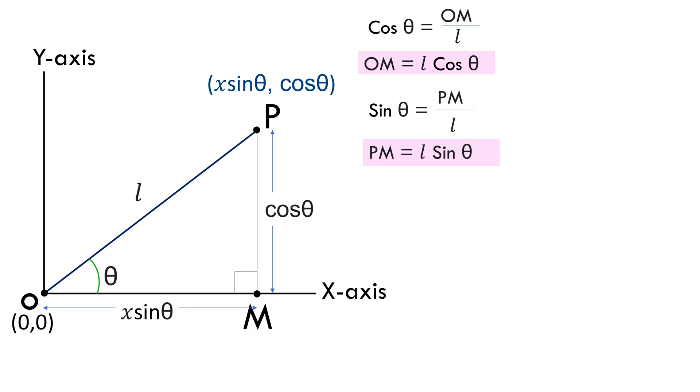But we have calculated OM and PM to be l cos theta and l sin theta respectively. Because both the values of OM and PM has to be true, we will equate these two values of OM and then do the same thing with PM.